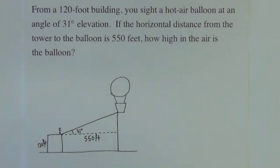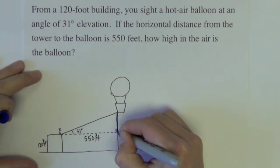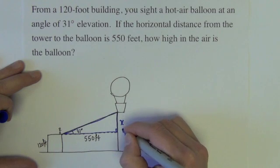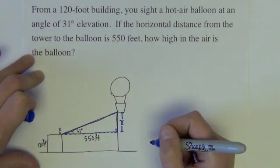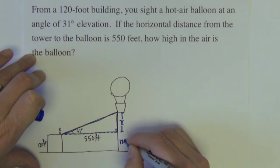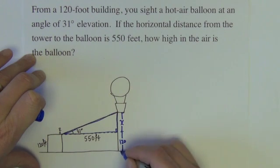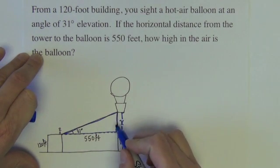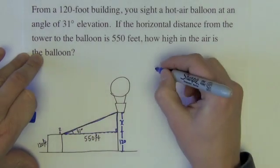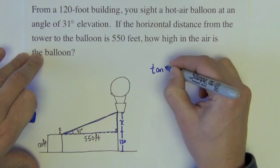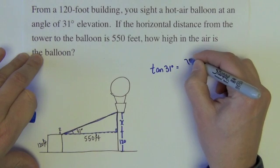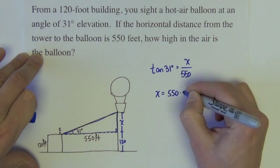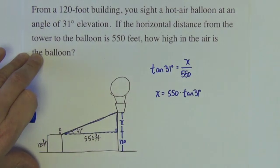How high is the balloon in the air? Well, the right triangle that we have just drawn is right here. From that right triangle, we'll be able to find this height, call it x. And then we'll just need to add to that the 120 feet here. And we'll have the height the balloon is in the air. So the x is on the opposite side. The 550 is on the adjacent side. So I can find the x with the tangent equation.